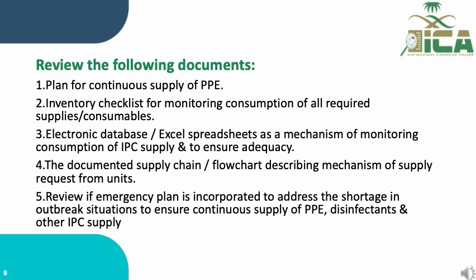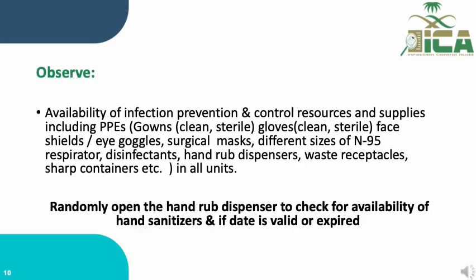Document number three: an electronic database or Excel sheet as a mechanism for monitoring consumption of IPC supplies and ensuring adequacy. Number four: a documented supply chain flowchart describing the mechanism for supply requests from the unit. Number five: review if an emergency plan is incorporated to address shortages in outbreak situations to ensure continuous supply of PPE, disinfectants, and other IPC supplies. Also observe the availability of IPC resources and supplies in all units — for example, randomly open hand rub dispensers to check for availability of hand sanitizer and whether the product is valid or expired.